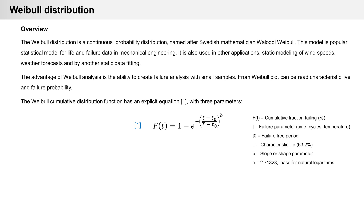F is the fraction failing. T is the failure parameter — time or cycle, sometimes temperature. T₀ is the failure-free period. Big T is the Weibull characteristic life. B is the slope parameter, and A is the base for natural logarithm.